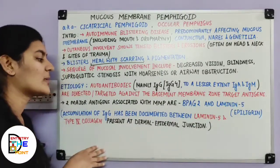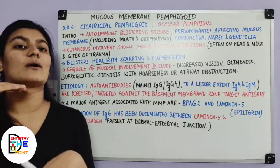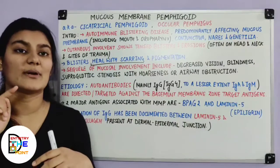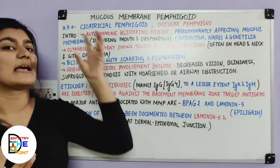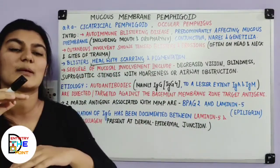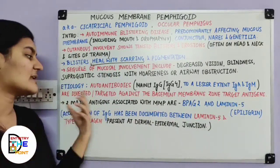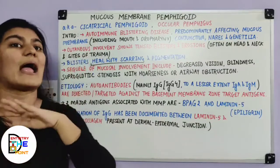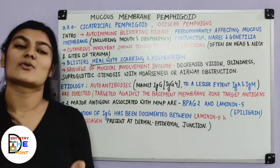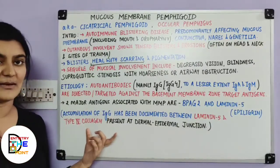Since this is a subepidermal blister, blistering occurs between the dermis and the epidermis. The IgG autoantibodies are directed at the basement membrane zone at that junction, where the antigens act and the blister forms. Various studies have confirmed the accumulation of IgG at the dermal-epidermal junction.